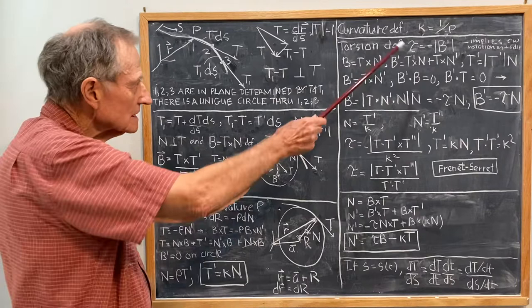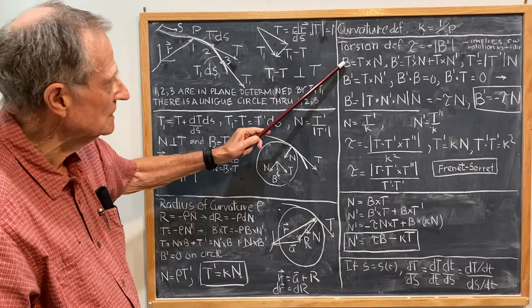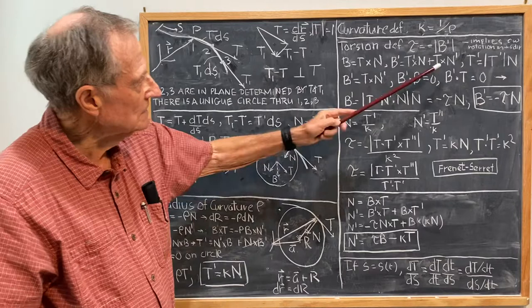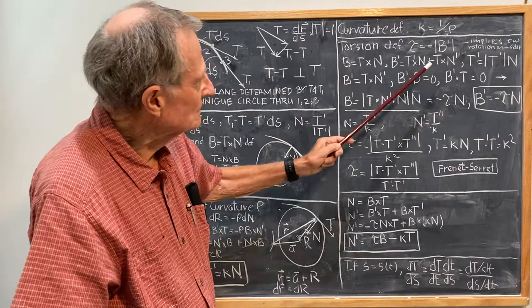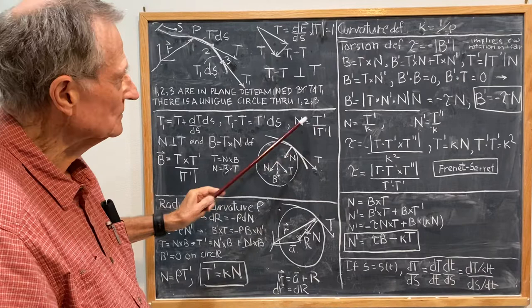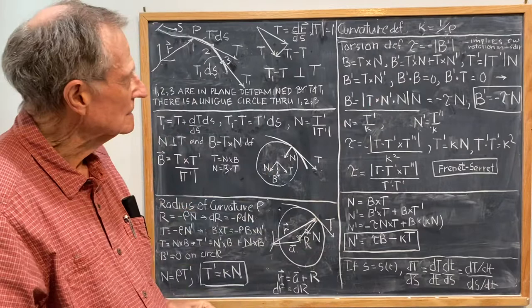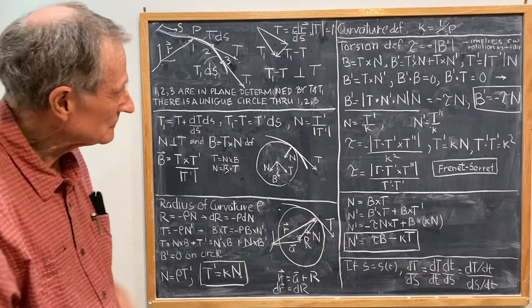To get what B prime is or what τ is, we start by, again, the same principle. We start with B equal T cross N. Then B prime is T prime cross N plus T cross N prime. T prime is absolute value of T prime times N, so that N cross N is zero. And that leaves us with B prime is equal to T cross N prime. The hardest part is over.